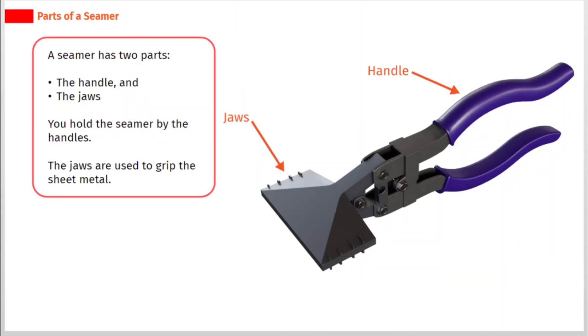A seamer has two parts, the handle and the jaws. You hold the seamer by the handles. The jaws are used to grip the sheet metal.